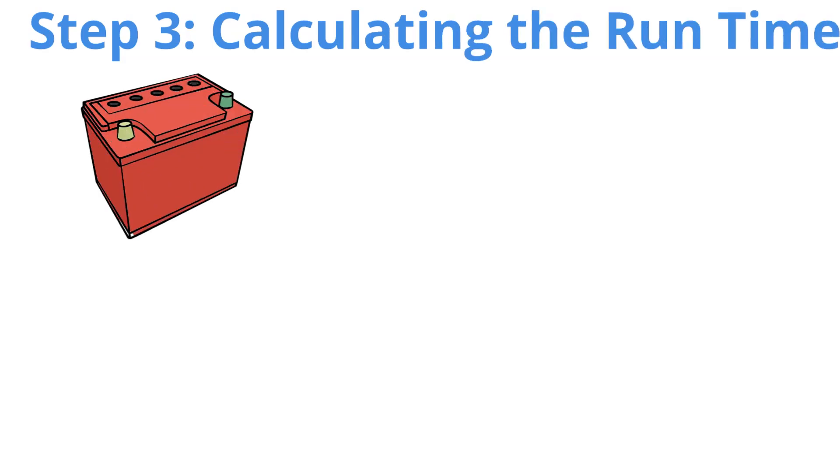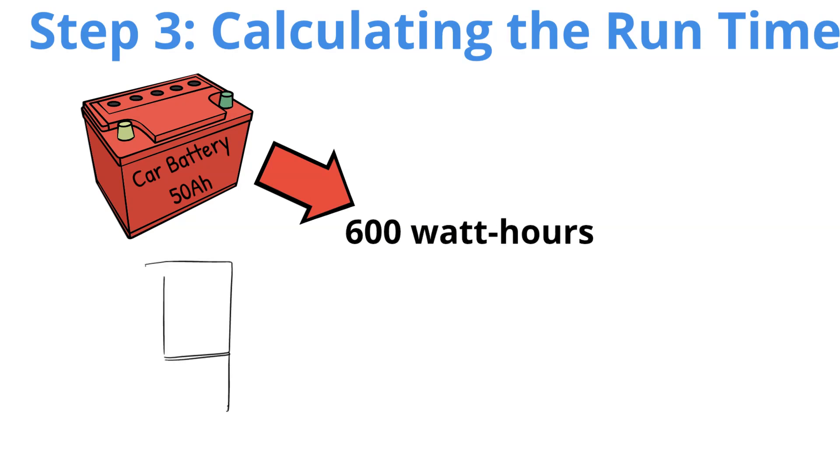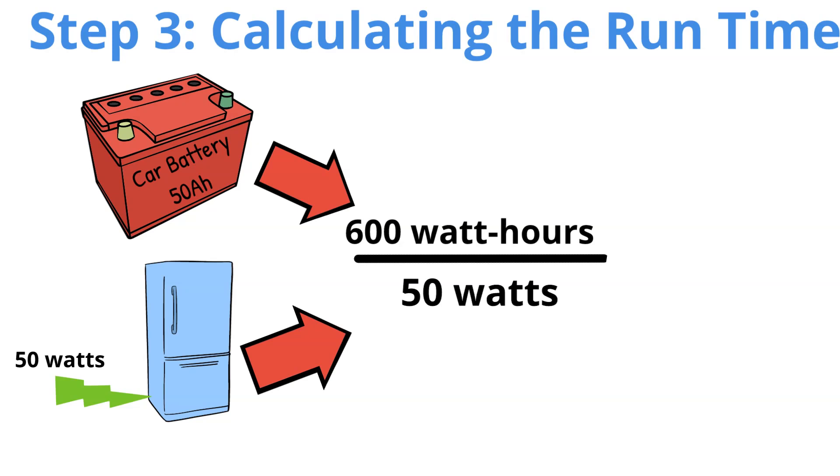Step 3: Calculating the Run Time. Now let's calculate how long the car battery will run the 12-volt fridge. We do this by dividing the total watt hours of the battery by the fridge's power consumption. So, in an ideal situation, a fully charged car battery can run a 50-watt 12-volt fridge for about 12 hours.